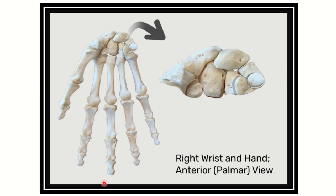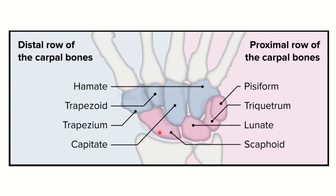Let's look at the carpal bones. These bones form the wrist joint and the joints between the carpal bones. Then there are the metacarpals and then phalanges. Here we can see the carpal bones — proximal and distal rows — total eight in number.